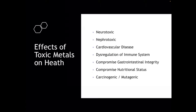The end result: the effects of toxic metals are pretty much neurotoxic, nephrotoxic, cardiovascular, causing dysregulation of the immune system. They compromise gastrointestinal integrity and nutritional status. They are carcinogenic and they are mutagenic. These substances hit pretty much every system in the human body, which means the amount of diseases they can participate in creating are huge. So again, trying to underscore the importance of your learning about this and having this in your vocabulary.